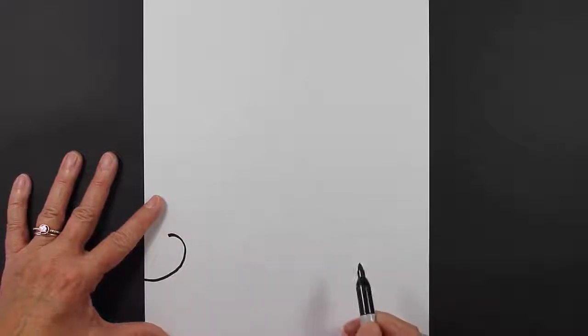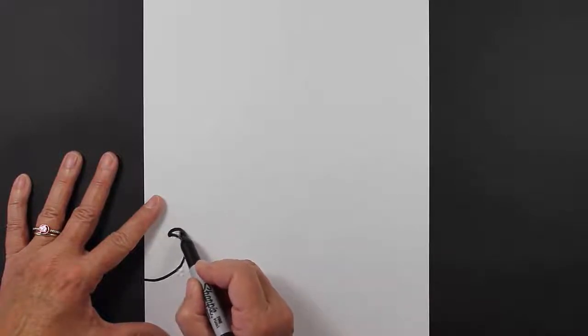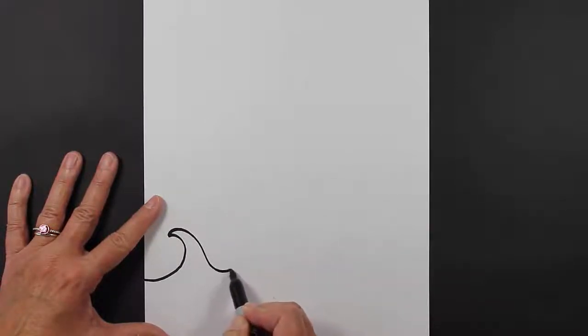The first thing that we're going to do is make some waves, and I'd like to show you the way that I make some waves. I make a curved line coming this way, and then I come down, and I make another curved line like this.